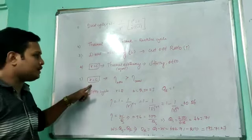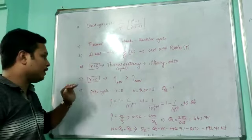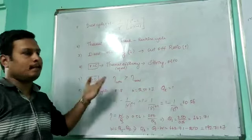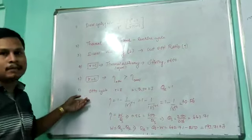For same compression ratio, efficiency is equal to... for same compression ratio, Otto cycle efficiency is equal to... that is a problem.